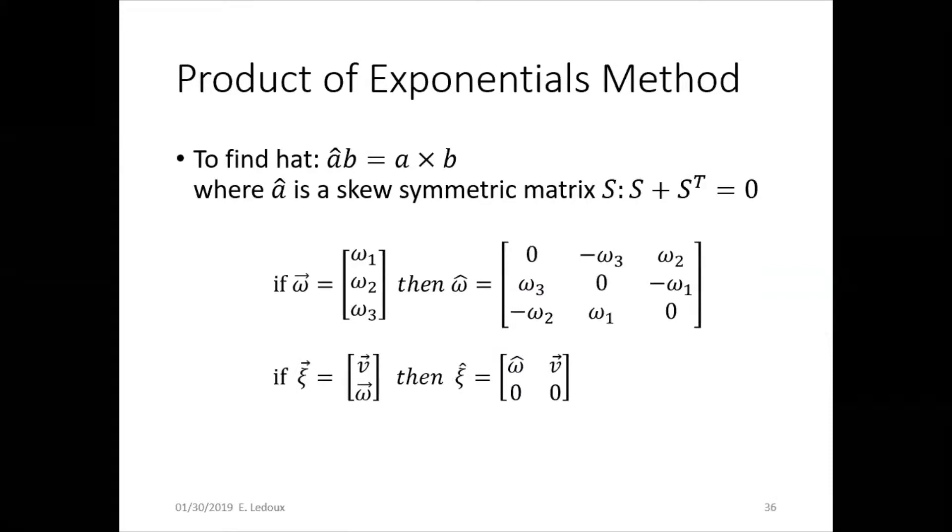To find the hat, the hat is a matrix operation where â times b is the same as a cross b. So it's like a way to write a cross product with matrices. And â is a skew symmetric matrix. So it's not exactly symmetrical, but there are zeros along the main diagonal and sort of inverse symmetrical on the opposite corners of that. So these are the formulas of how you would get the hat vectors.